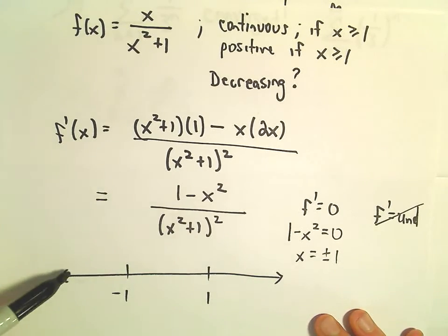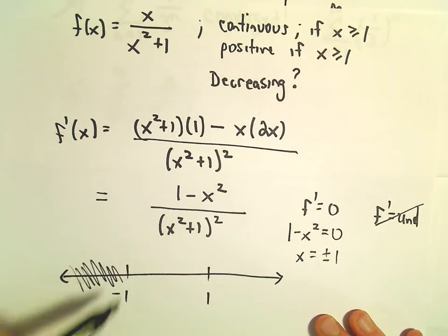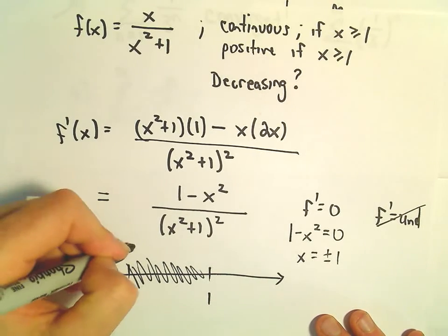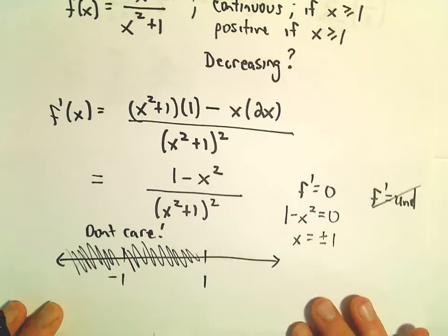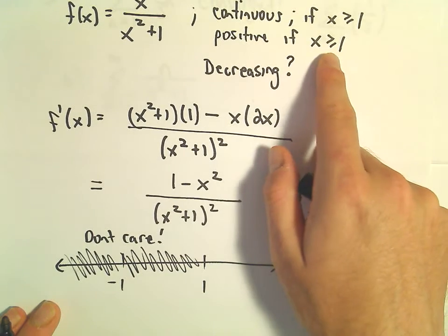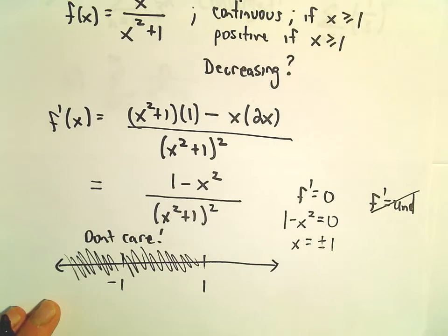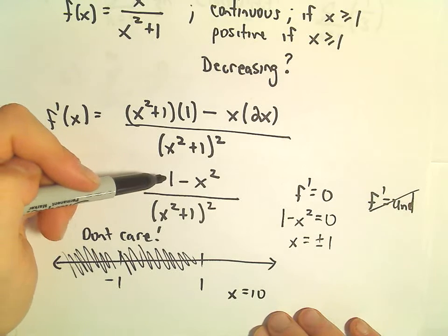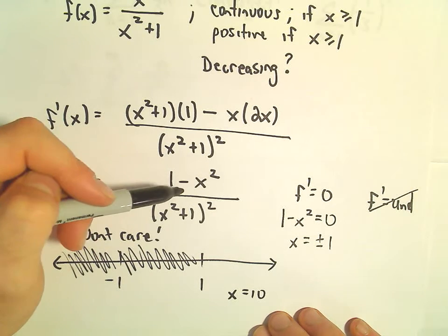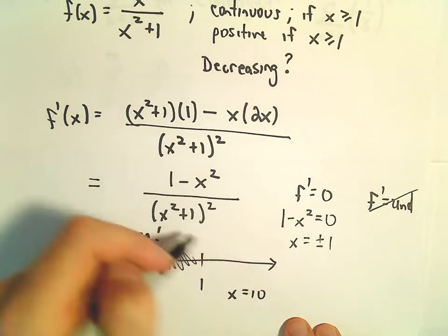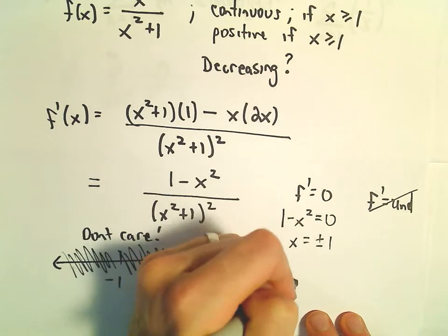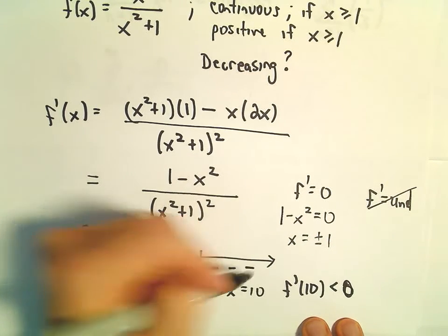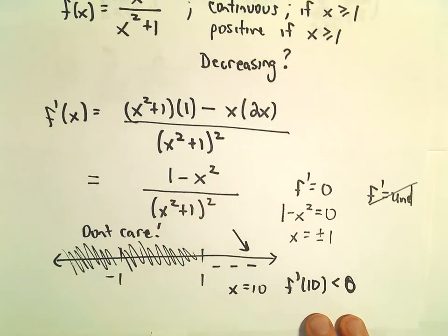Honestly, I don't even care what the function's doing back here, whether it's increasing or decreasing. And between negative 1 and 1, I also just don't care whether it's increasing or decreasing. All I really need to know is, for values of x that are 1 and larger, what's happening to the function? Well, if I take a number bigger than 1, let's say x equals 10, in the numerator, you would have 1 minus 100, which is definitely negative. In the bottom, you're squaring it, so it's always positive. So f prime of 10 is definitely less than 0. So that tells us, since the derivative is less than 0, that our function is decreasing.